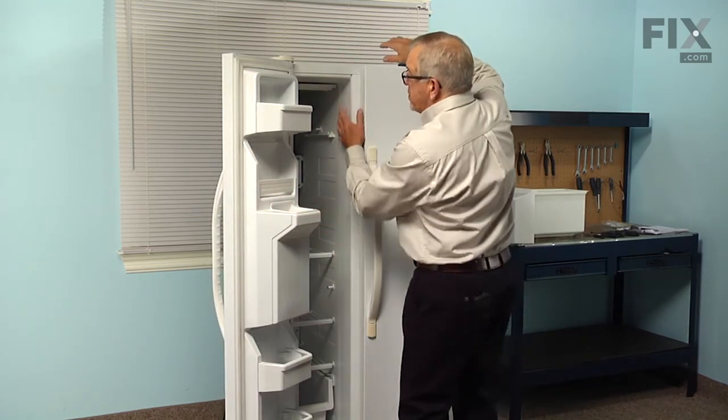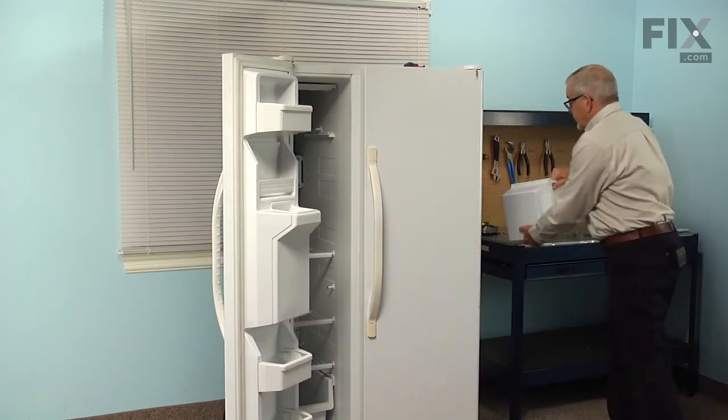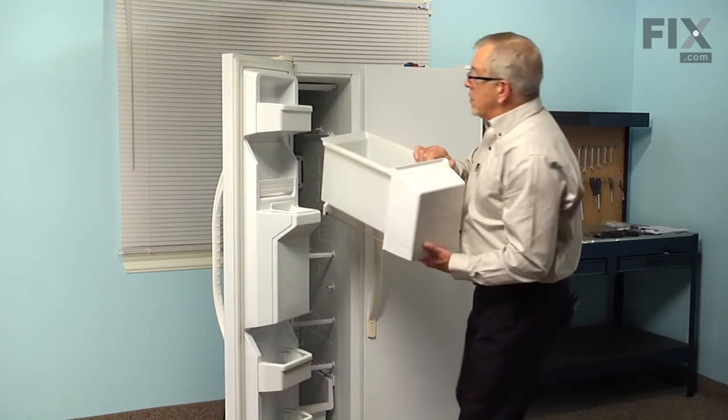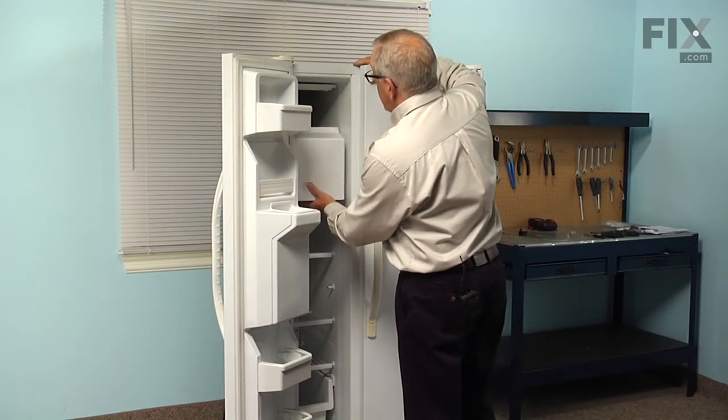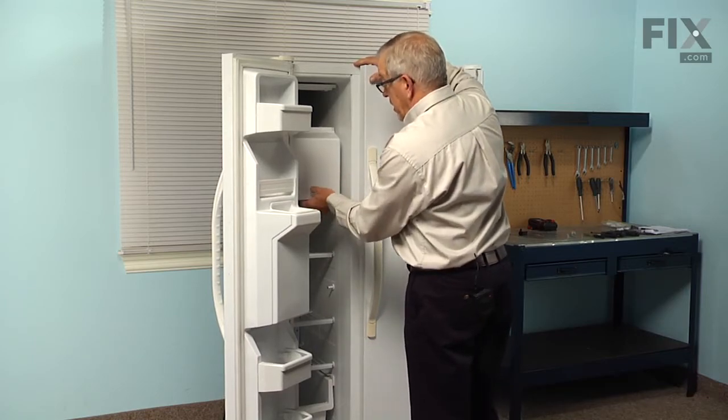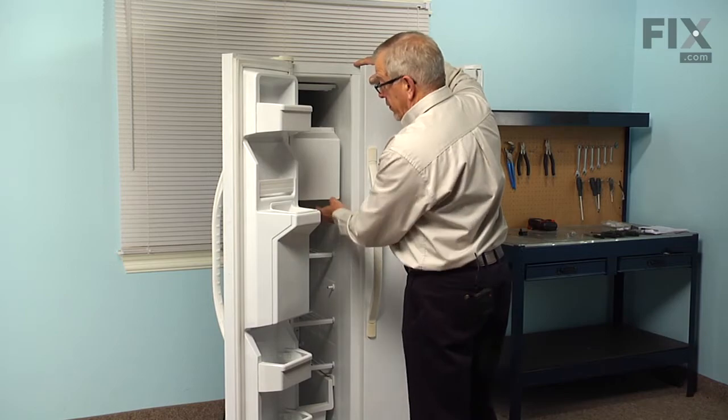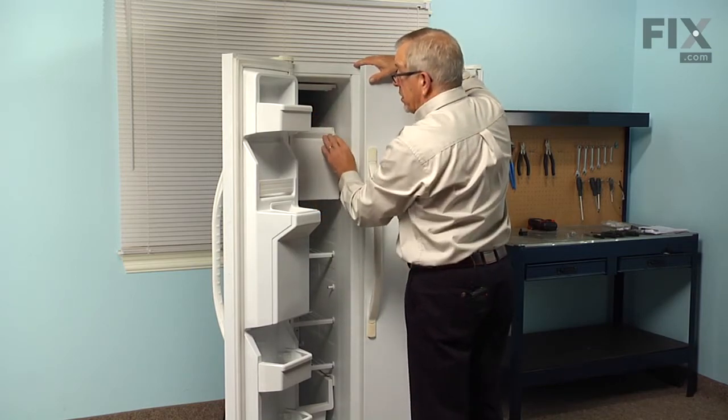We'll leave the ice maker in the off position until we have the ice bin remounted. So we're simply going to set that on that track, slide it all the way in, just lift up in the front of it at the very end and make sure it's properly engaged and then reach in and lower the shut off arm.